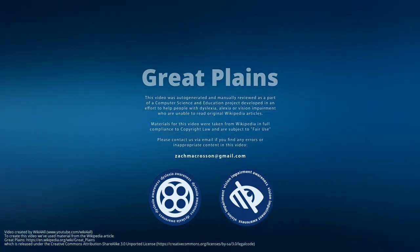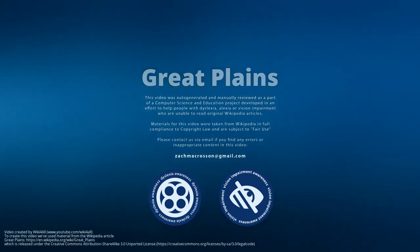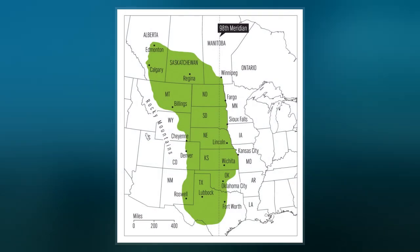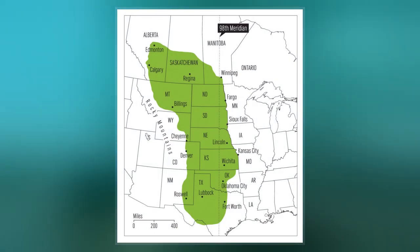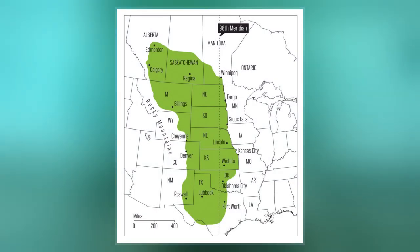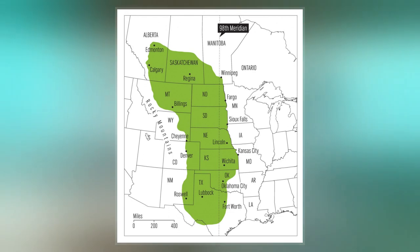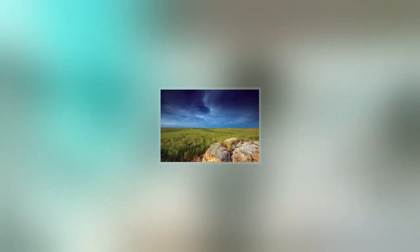The Great Plains, sometimes simply the Plains, is a broad expanse of flatland in North America. It is located west of the Mississippi River and east of the Rocky Mountains, much of it covered in prairie, steppe, and grassland.